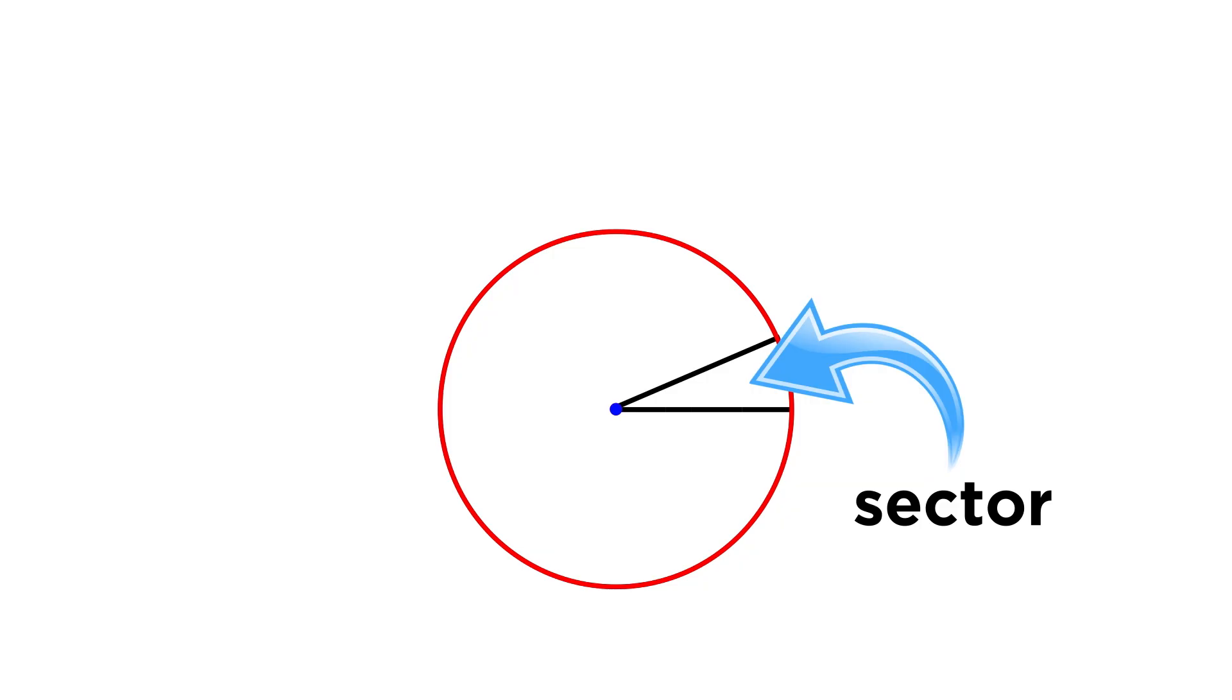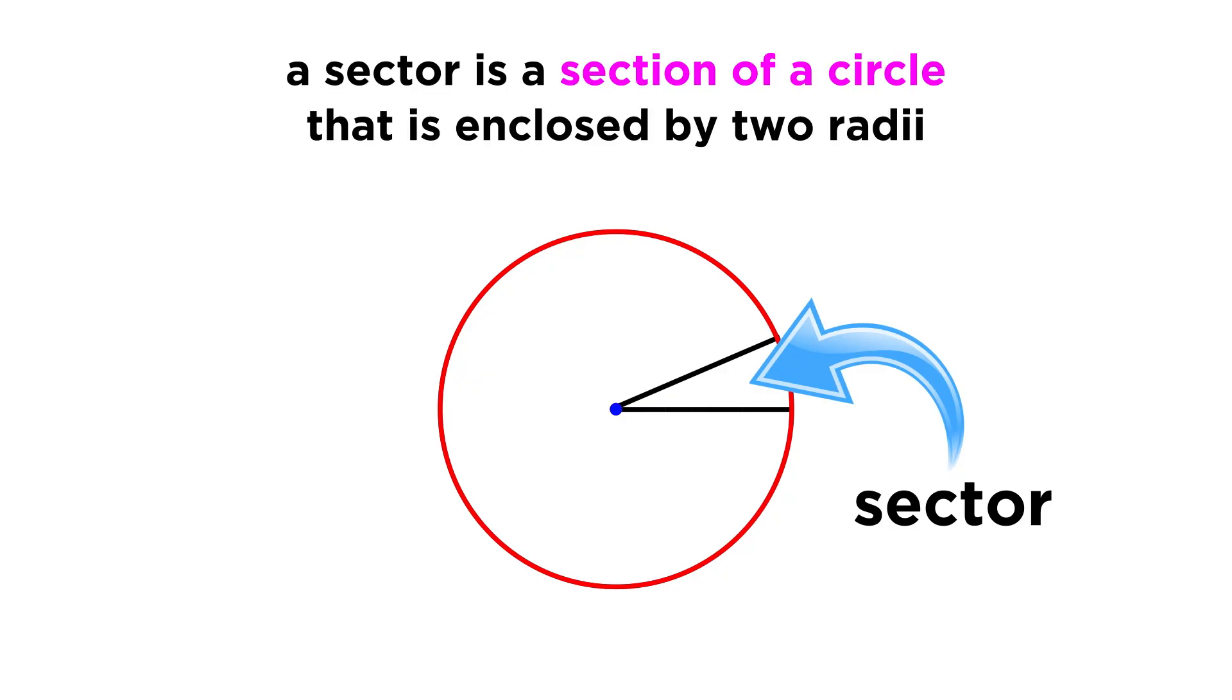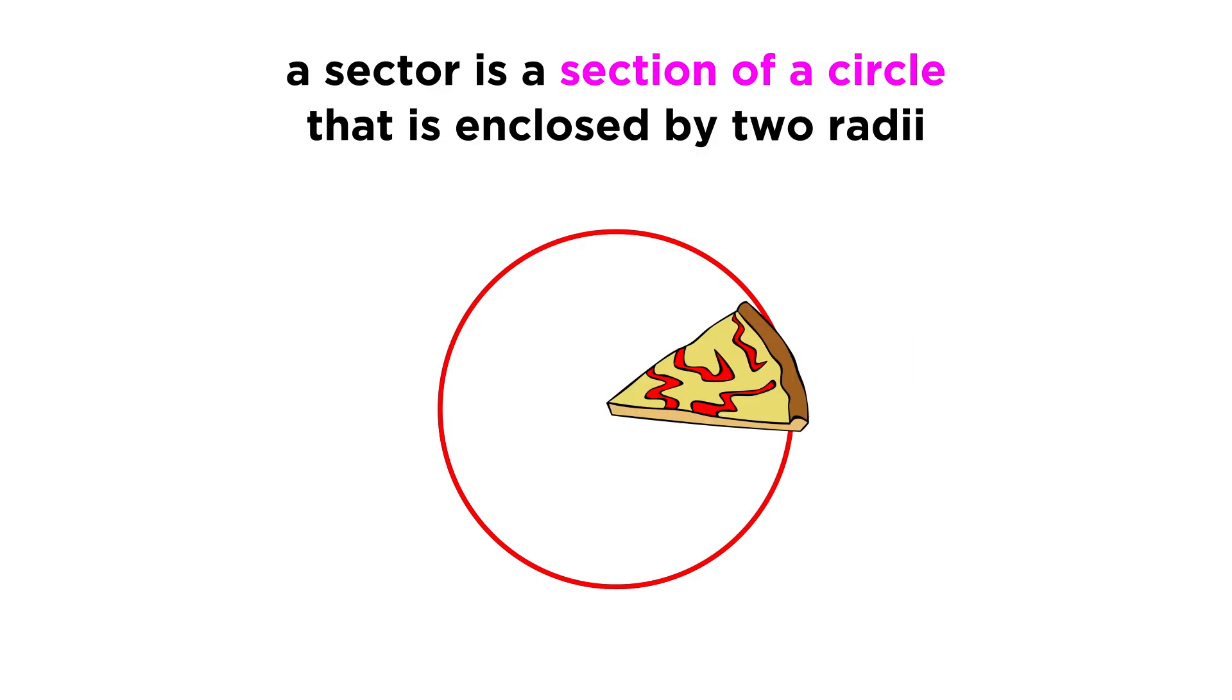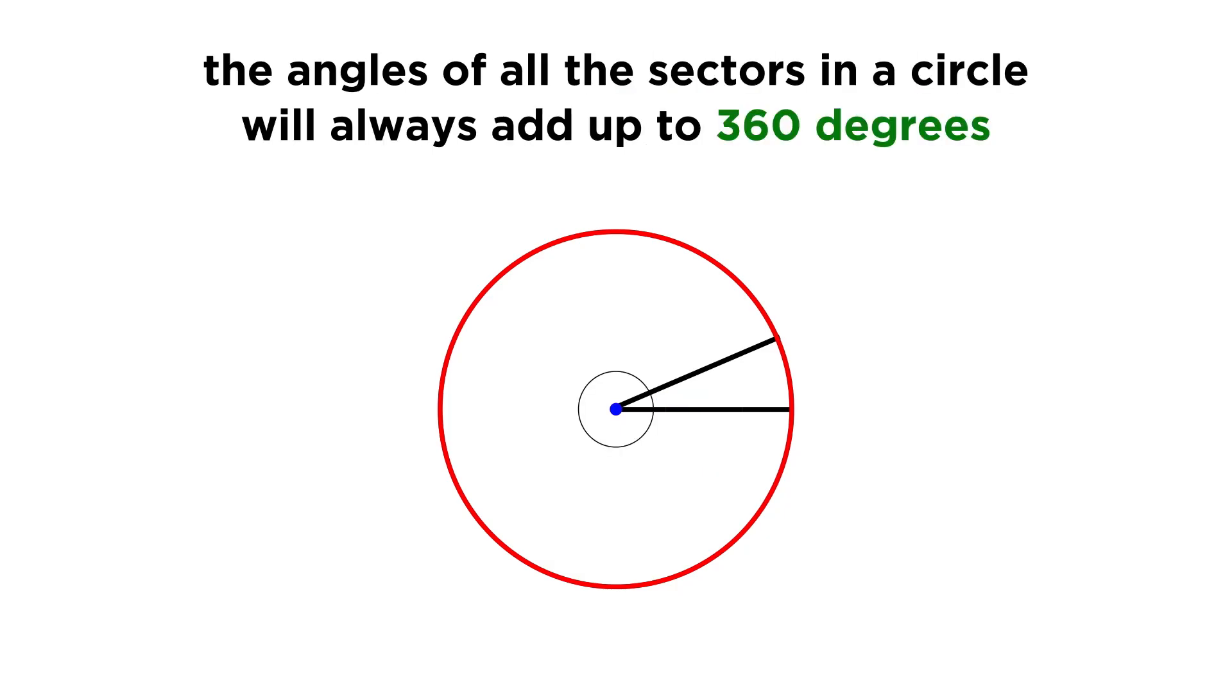If we draw several radii on one circle, we will demarcate several sectors of that circle. A sector is a part of a circle enclosed by two radii and the arc that connects them, like a slice of pizza. Within this sector, there is a central angle, and the angles of all the sectors in a circle will always add up to 360, or one full revolution.